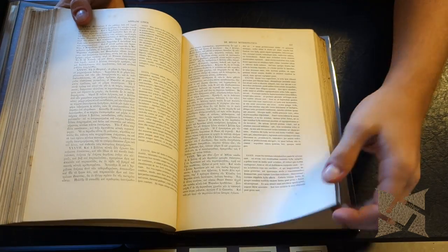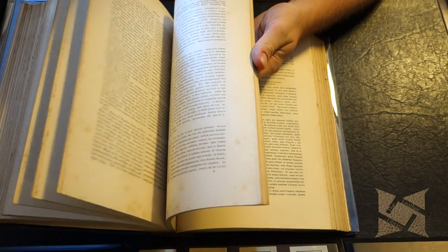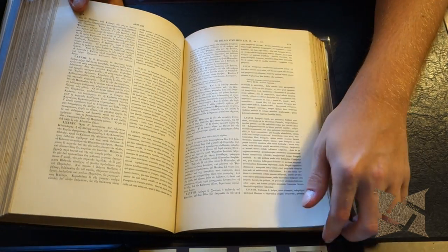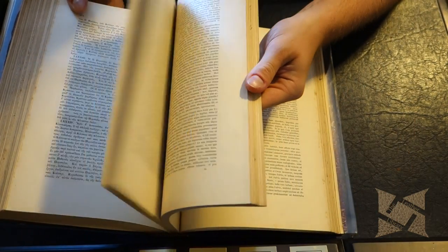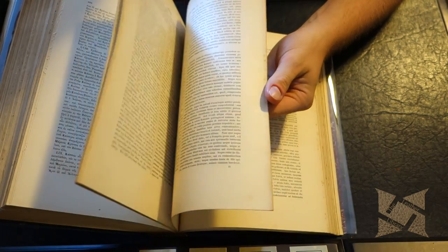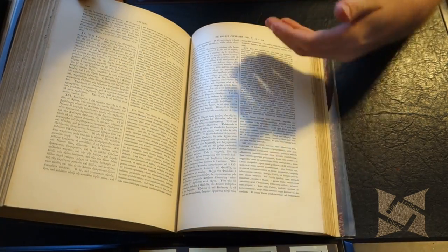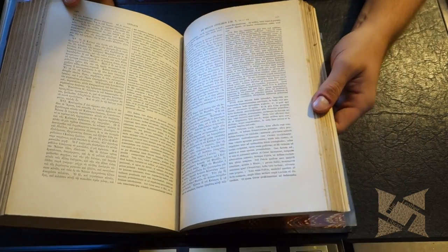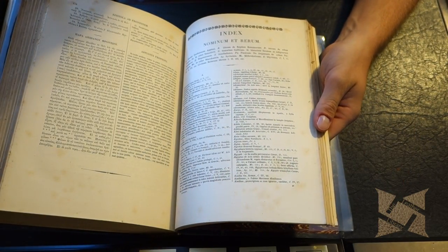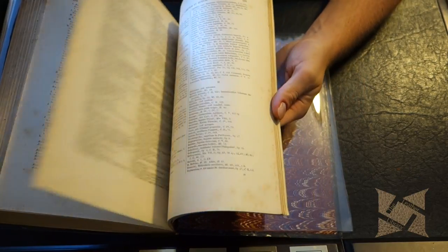The papers do have some age to them and you can tell as you go through, some are cleaner than others, some do have watermarks and such, but overall the text itself is unmolested and it seems perfectly fine. We have the index here with names.